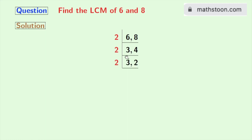Dividing, we get 2 in the second place and 3 remains the same in the first place, as 3 is not divisible by 2. Now the process repeats again. Check if any of these numbers is divisible by 2. The second number 2 is divisible by 2, so we take 2 here. Dividing, we get 1 in the second place and 3 remains the same in the first place.